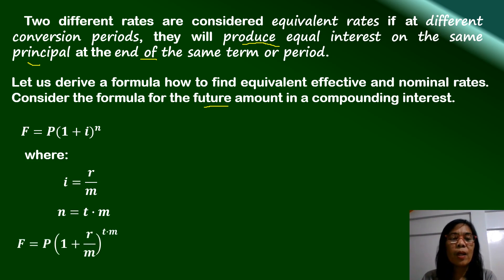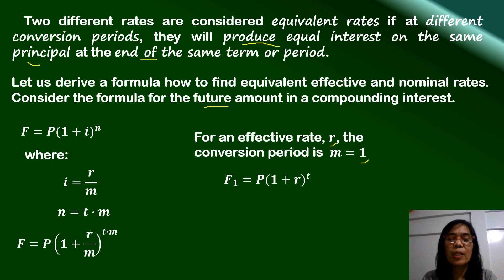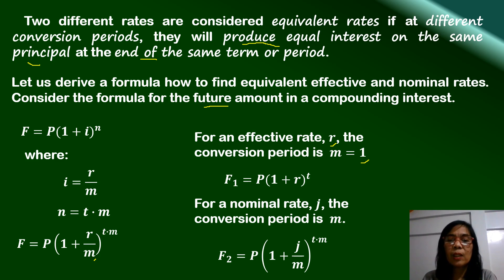This gives us F equal to P times (1 plus R over M) raised to T times M. For an effective rate R, the conversion period is annual, so M equals 1, and the formula becomes F₁ equal to P times (1 plus R) raised to T. For a nominal rate J, the conversion period is M, so the future value F₂ equals P times (1 plus J over M) raised to T times M.